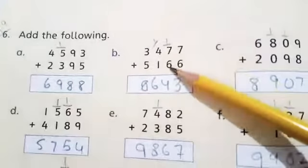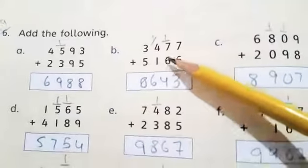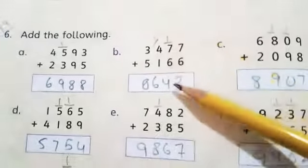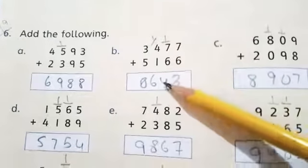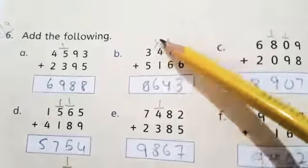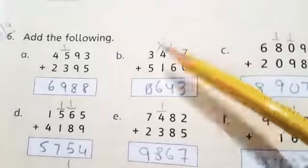Now add them again. 7 plus 6 is? Excellent, 13. 13 plus 1 is? 14. 4 in 10's place and 1 in 100's place.